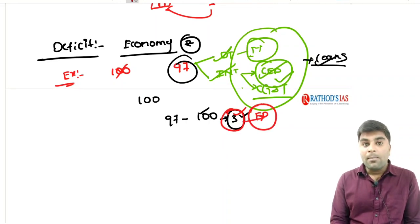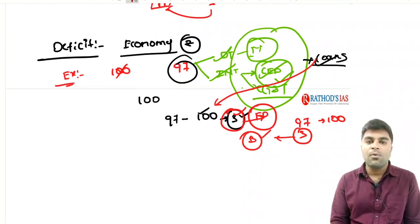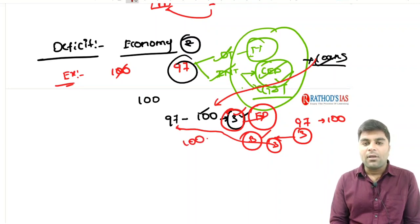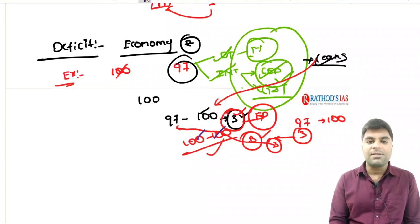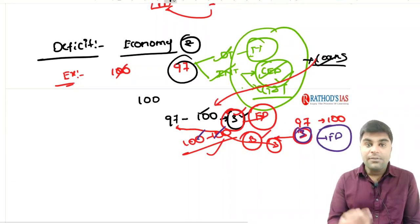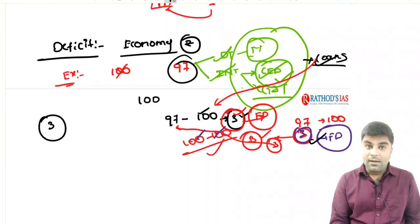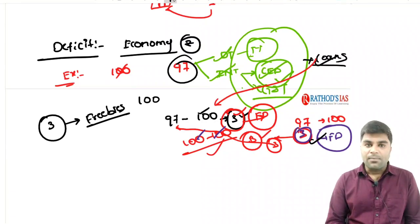This 3 rupees which is borrowed by the government is called the fiscal deficit — the outstanding borrowings and liabilities of the government at the end of the financial year. The government borrows 3 rupees to make the expenditure of 100 rupees. The main problem is that even this borrowed money is going to be spent in order to provide freebies to the people.